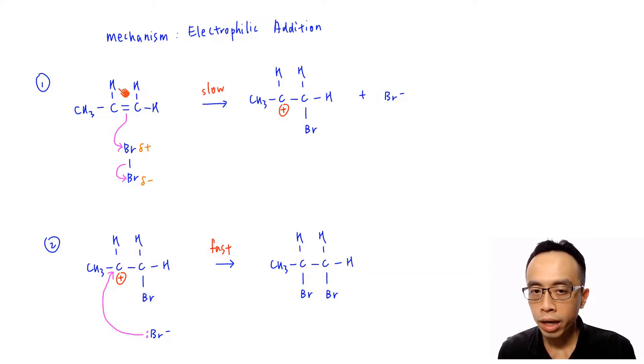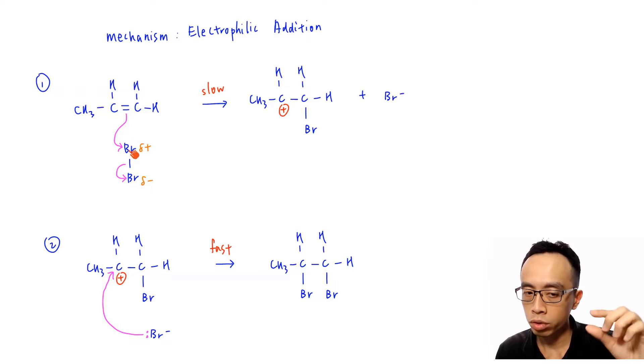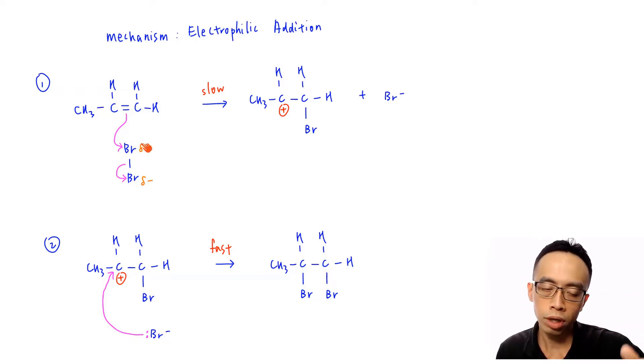So alkene is electron-rich and it will react with species that are electron-poor. So therefore when your bromine molecule approaches your alkene perpendicular to your alkene, there will be a distortion of electron cloud. Electron cloud will be pushed away from your bromine being repelled by my alkene. So the bromine which is closer will be a partial positive charge, bromine which is further away will be a partial minus charge. And because of that, the bromine that is closer is considered the electrophile, the E plus.